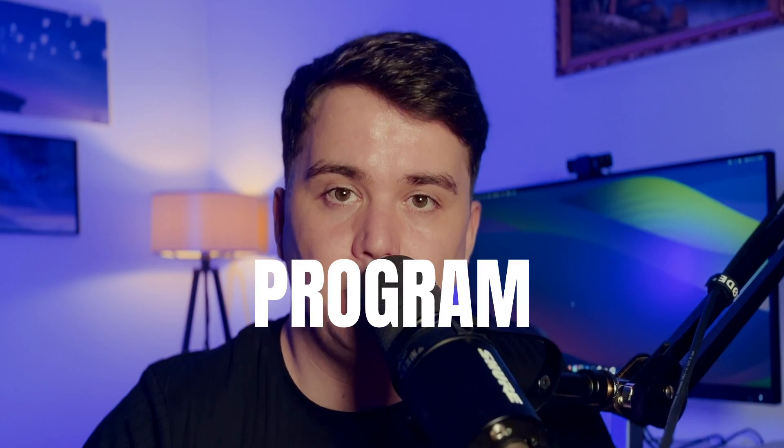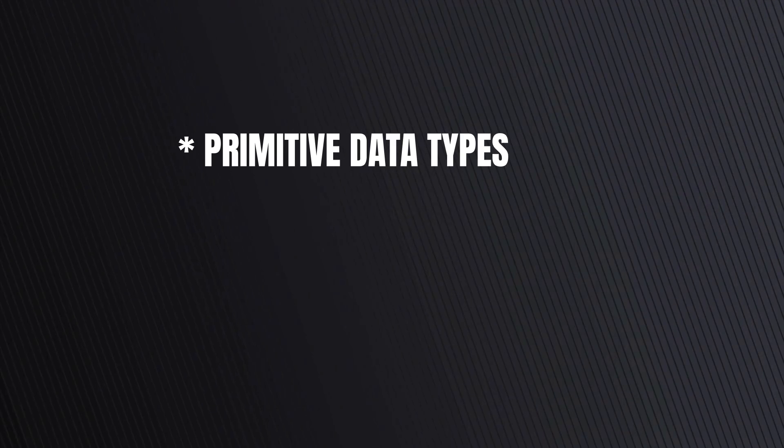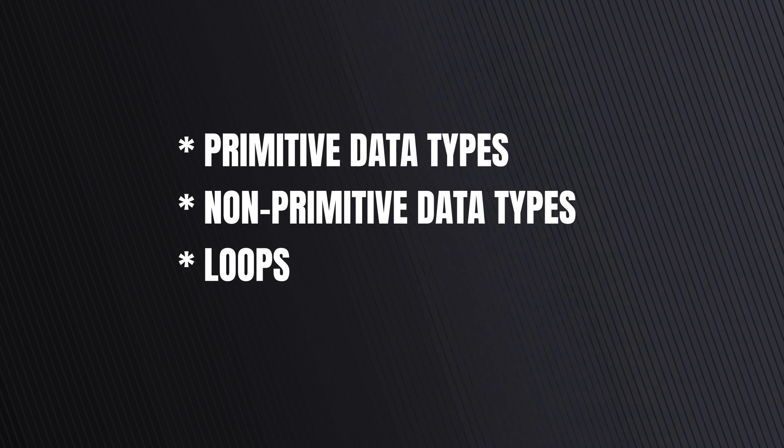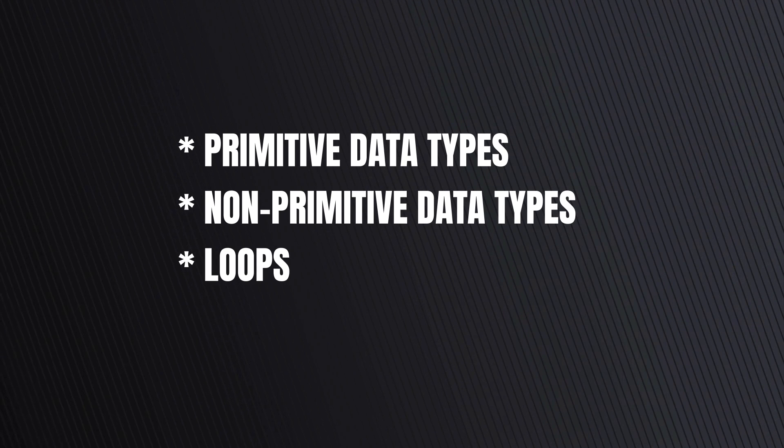Now let's get to the point — what do I mean that you are not learning programming? I told you about Unity's built-in components, but you can also build your own. And to do that you must learn how to program. To build your own stuff you don't need to know everything in C#. All you need to know is the bare bones — the fundamentals. Let me name a few: primitive data types, non-primitive data types, loops, and basic data structures. And that is it.